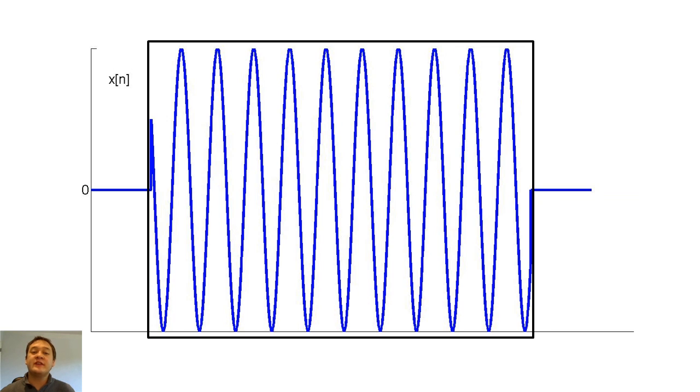While zero padding only increased the density of samples of the 32 sample DFT, increasing the sample size can actually cause our DFT to more closely resemble our original DTFT.